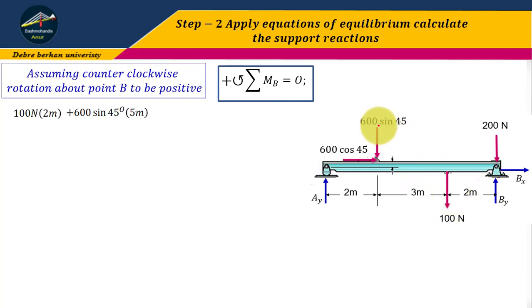Next, 600 cos 45 degrees. This distance is 0.2 meters.